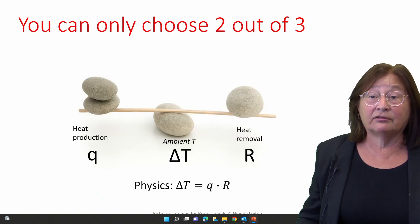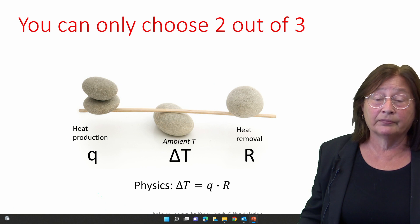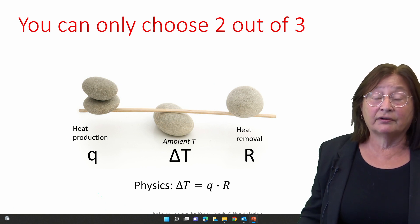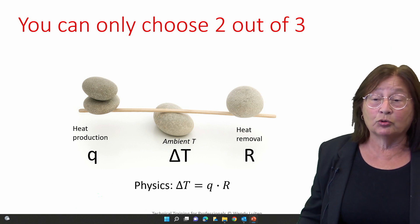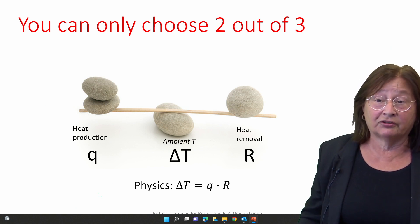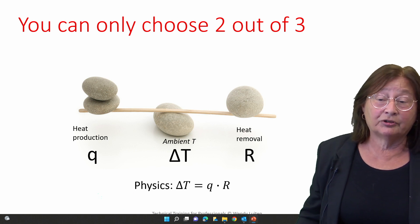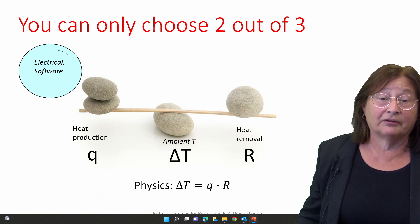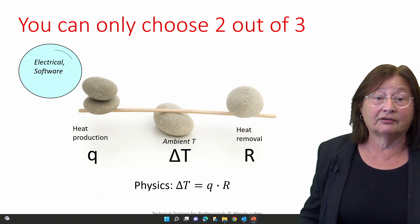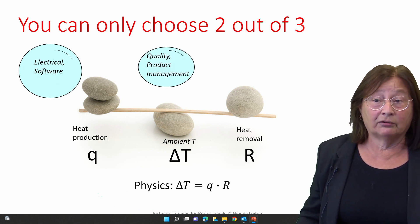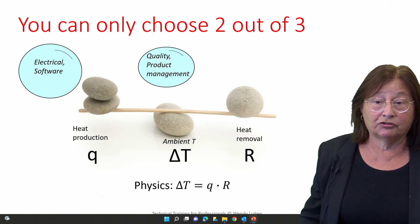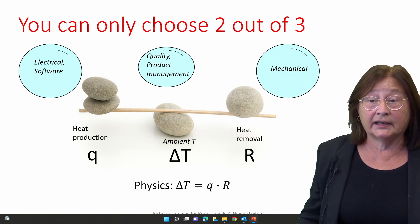Of these three, you can only choose two. So by the law of physics, there is a relation between the heat production, the amount of cooling that you can do — expressed as a thermal resistance R — and the temperature rise above ambient. In a typical product development, heat production is the domain of the electrical and software departments, temperature requirements are the domain of quality and product management, and heat removal is in the hands of the mechanical department.